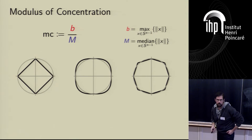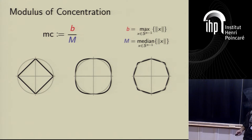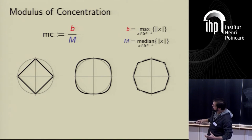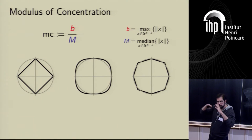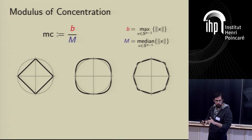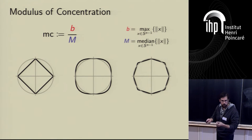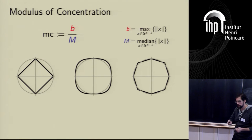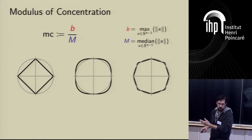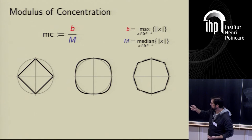Let me introduce the key parameter — the modulus of concentration, which will tell us the space complexity of every symmetric norm. It's the ratio b/m. To find b, I look at the L2 unit sphere and choose the maximum value attained by the norm on it. So b is the largest value of the norm on the unit sphere. And m is the median: imagine randomly choosing a point from the sphere and plugging it into the norm — the median of that distribution is m. The modulus of concentration is just the ratio b/m. It's at least one because the maximum is bigger than the median.